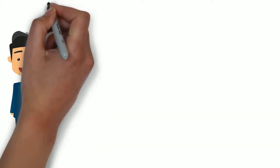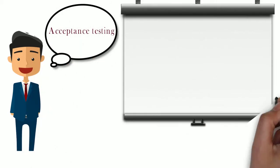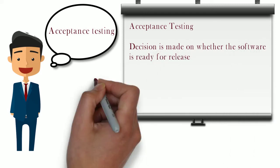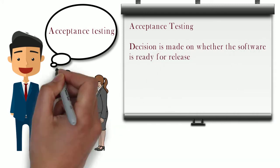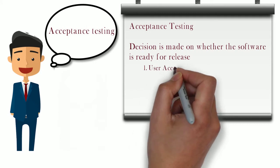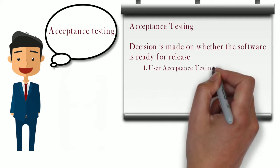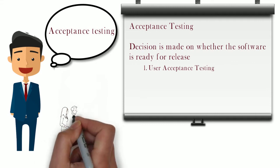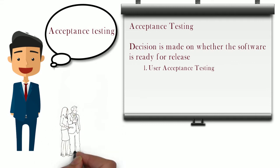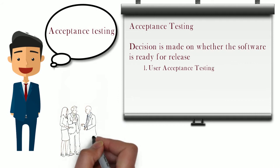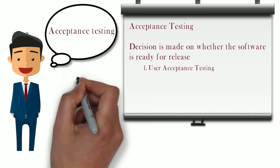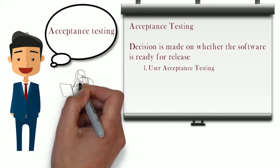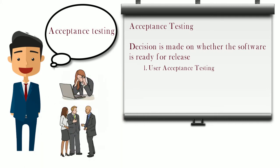The final test level is acceptance testing, which helps decide whether the software can be released to the market. The first type is user acceptance testing, where testing is performed by the end users. In our example, end users include customers who buy products, vendors who list products on the website, and people working in the online shopping website — these groups perform user acceptance testing.